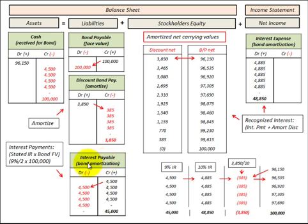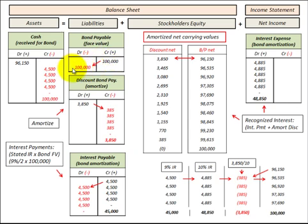Looking at interest payable, we reduce it each period by those interest payments made to bond holders. Our cash account is also reduced each period for the amount of those interest payments. When that bond becomes due, we also reduce cash by the $100,000 face value, and bonds payable is reduced when that bond becomes due or payable.